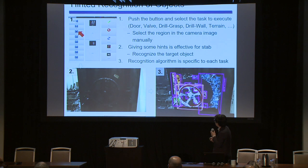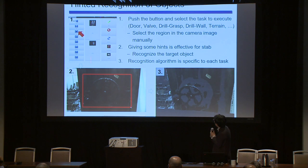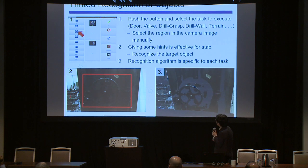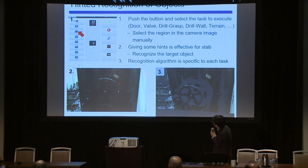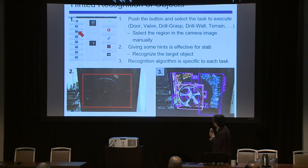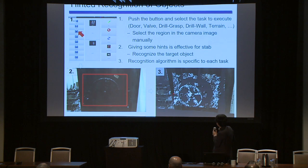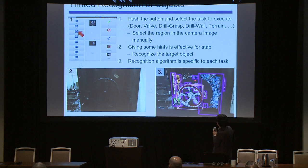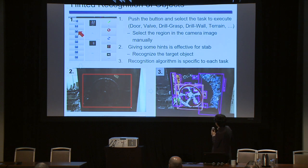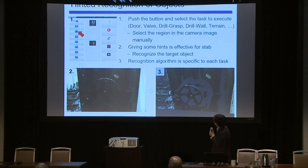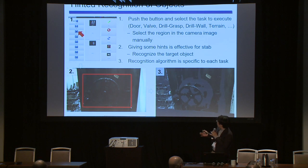This is an example of hinted recognition. The operator selects a type of recognition — for example, bulb recognition — and draws a rectangle to hint at the bulb position. Using this hinted rectangle, the system estimates the bulb position using a limited region of interest. This is a shared autonomy approach to recognition.